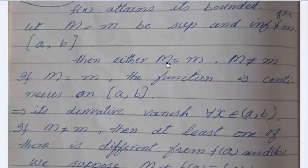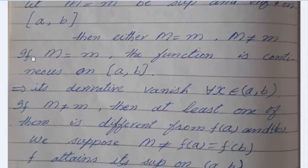Then, either M = m or M ≠ m. These are two conditions. If M = m, then function is continuous on [a,b], and its derivative vanishes for all x belonging to (a,b) in an open interval.